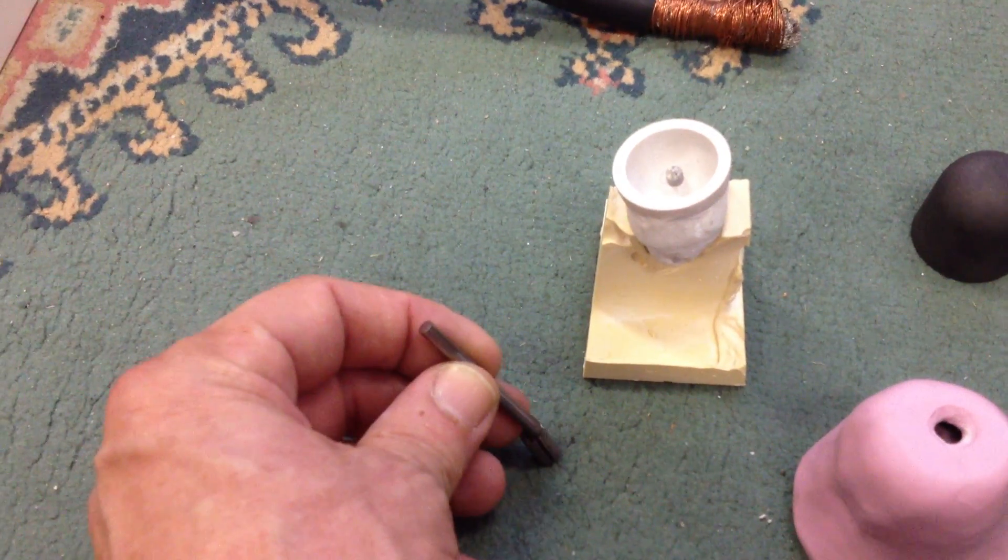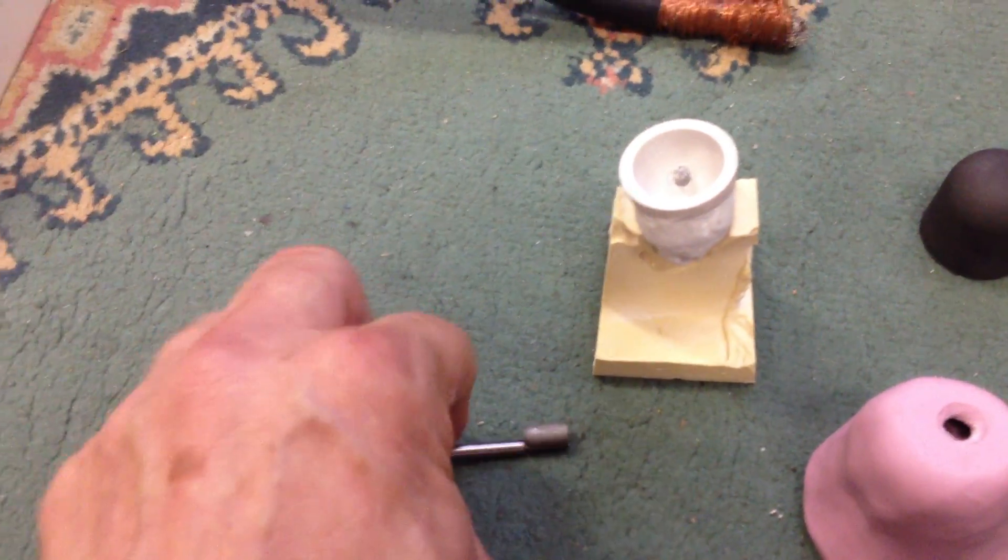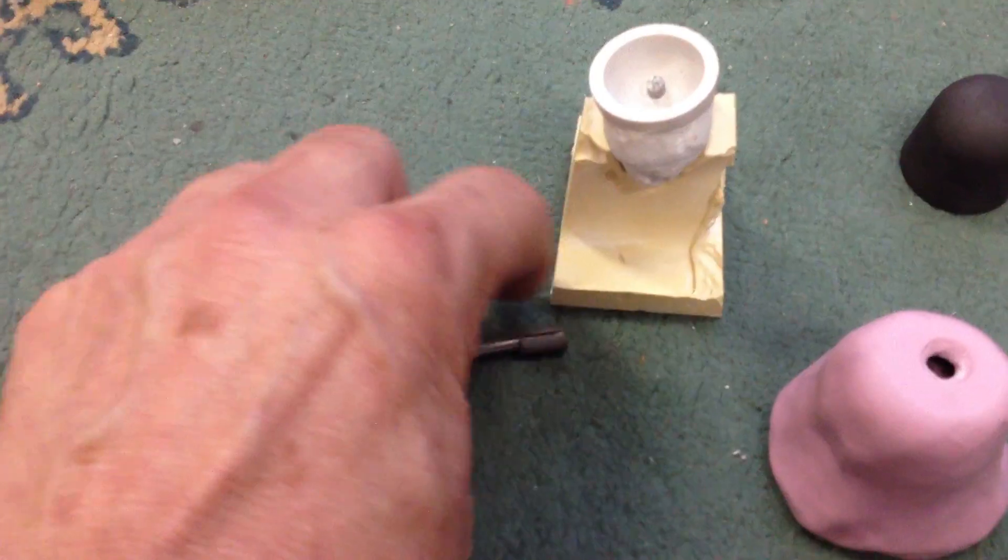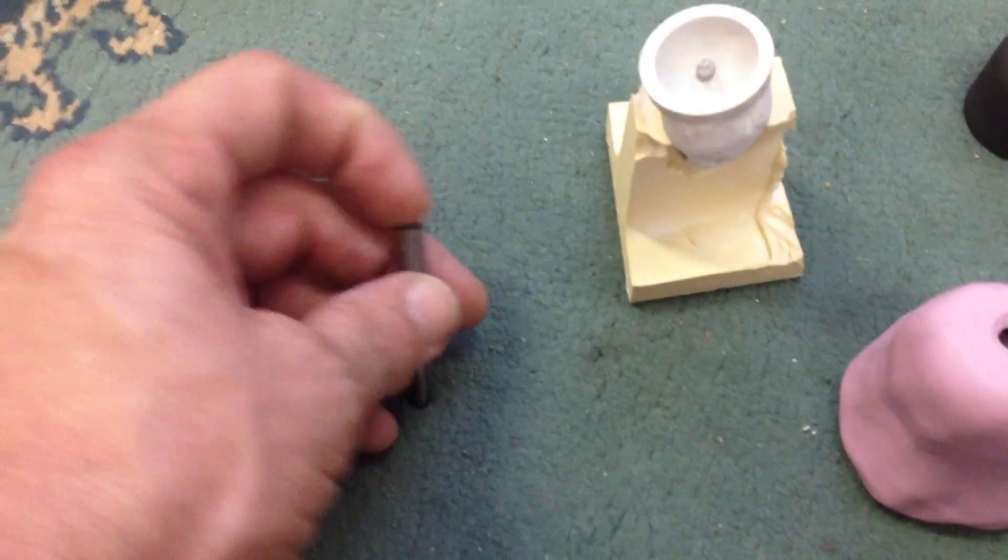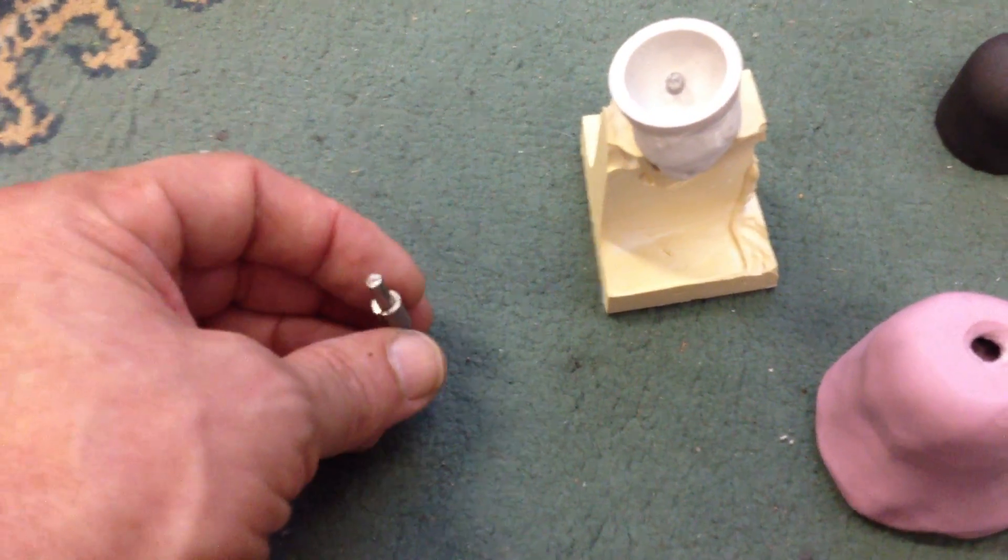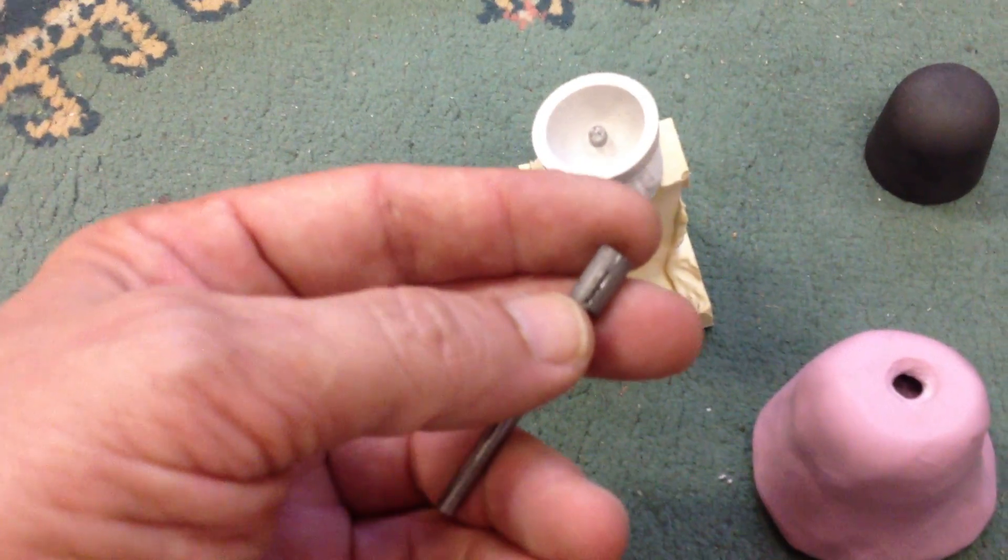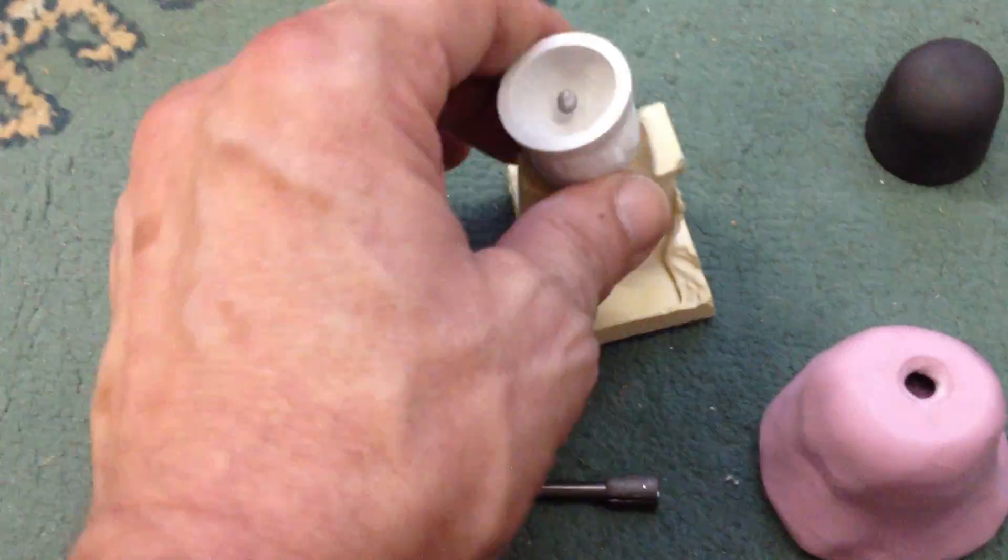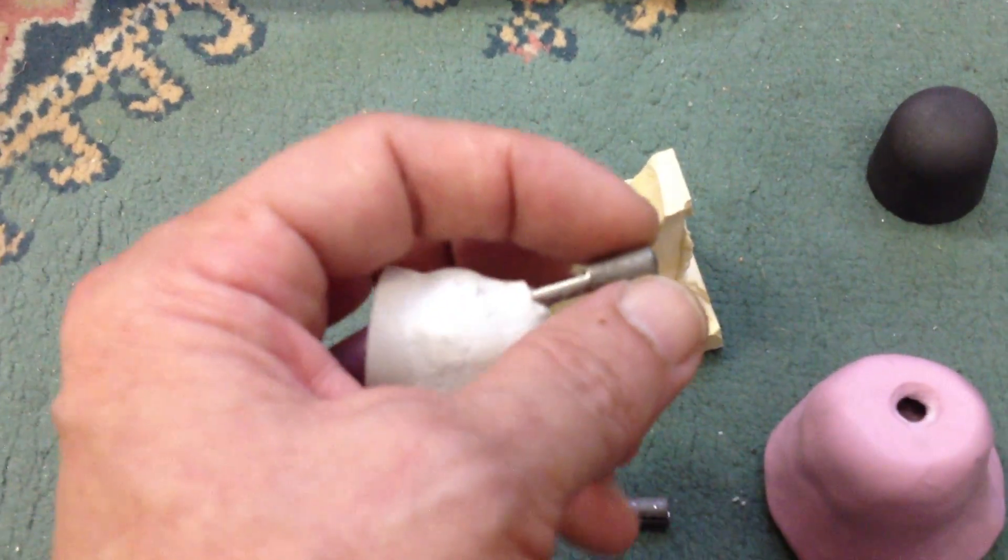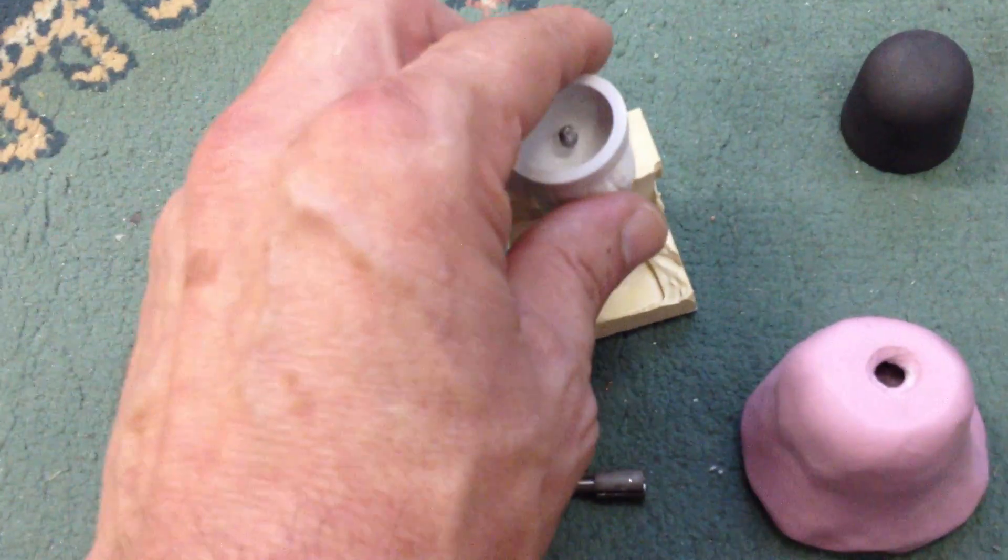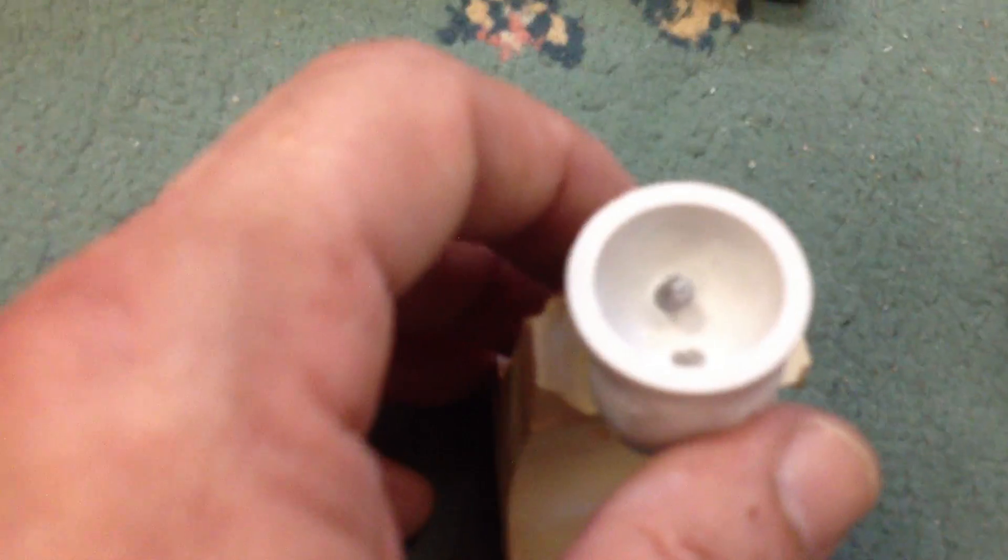And I've also cut a slit along it to facilitate the friction fit. After I determine the length and everything like that, just at the moment, this is quite a loose fit. But all I have to do is crimp it together a little bit and it'll end up being quite a solid fit like this side is here.